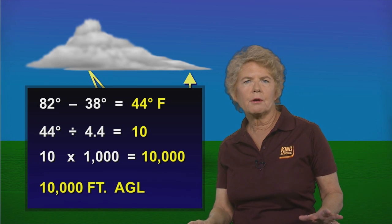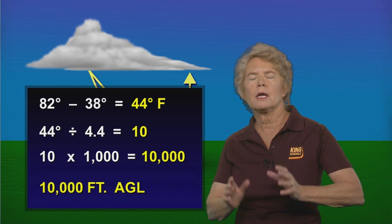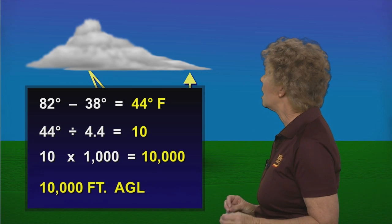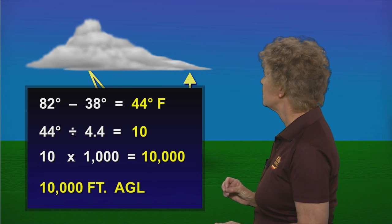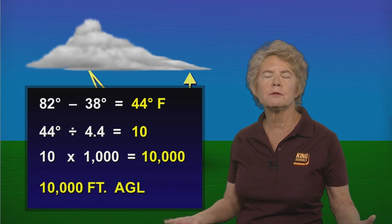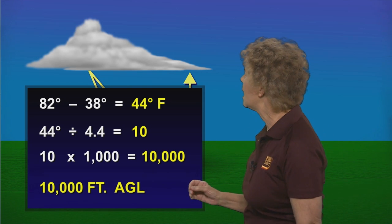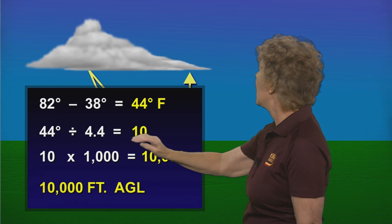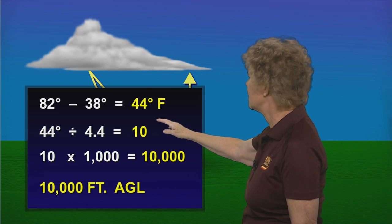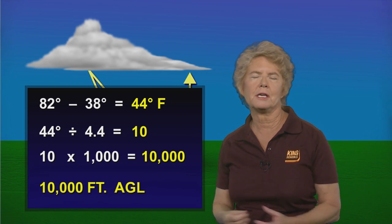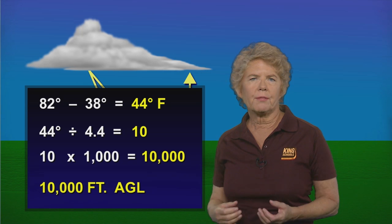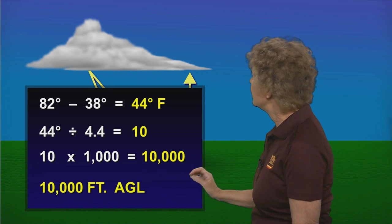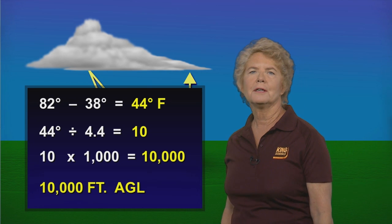Temperature and dew point get closer together with altitude at a rate of 4.4 degrees Fahrenheit for every thousand feet you go up. Divide 44 degrees by 4.4 and you get 10. Ten times a thousand feet means that the base of the clouds will be 10,000 feet above the ground.